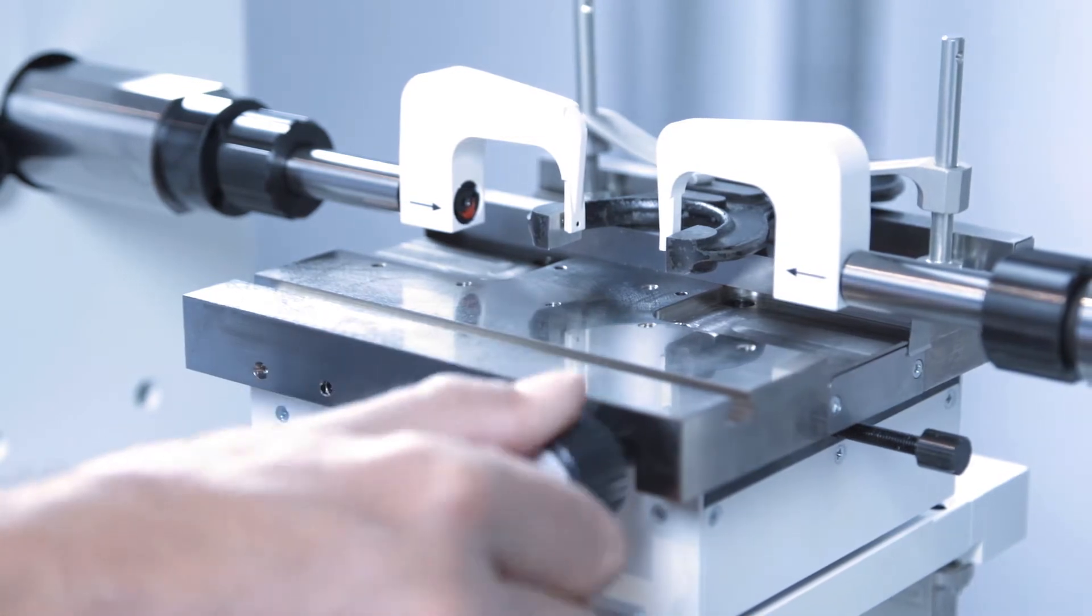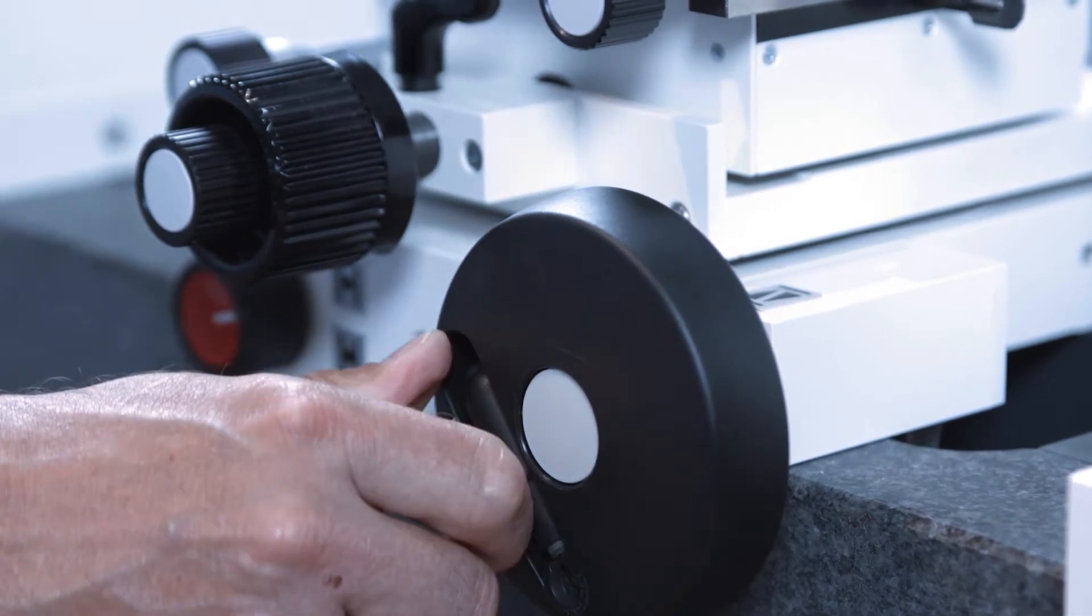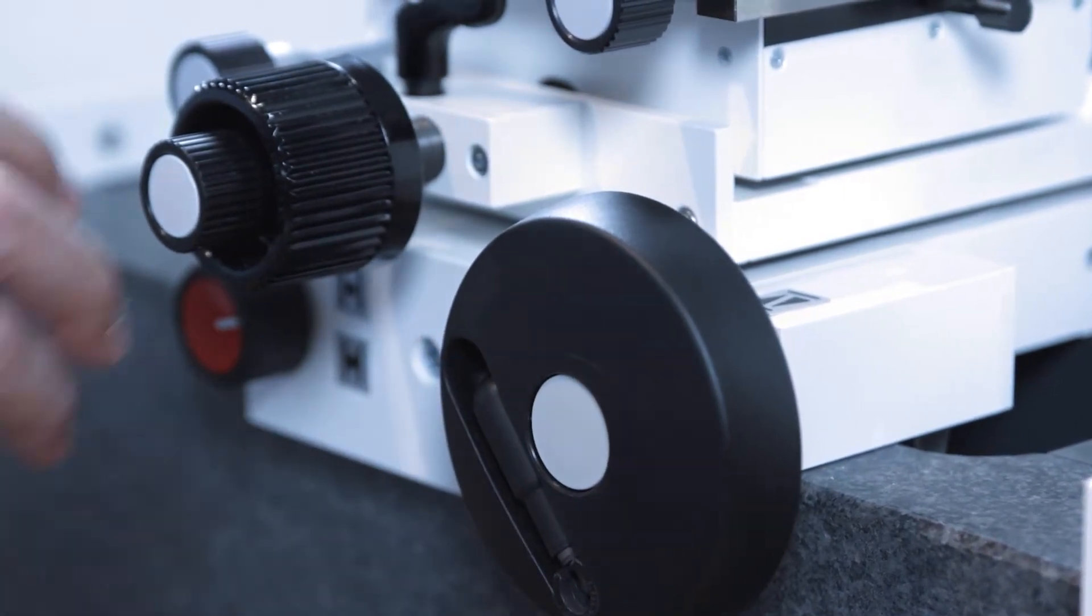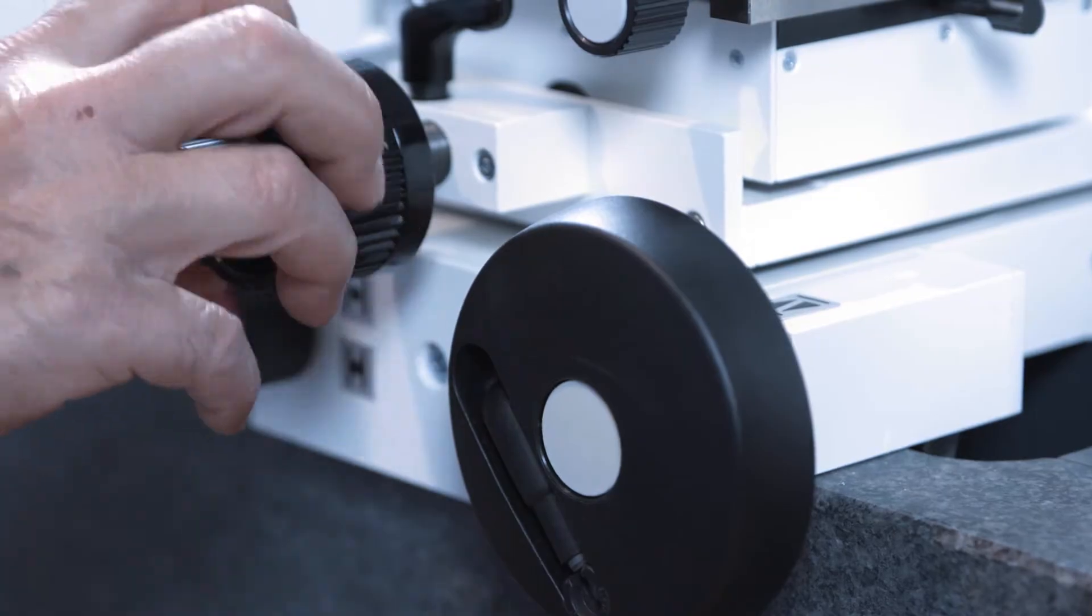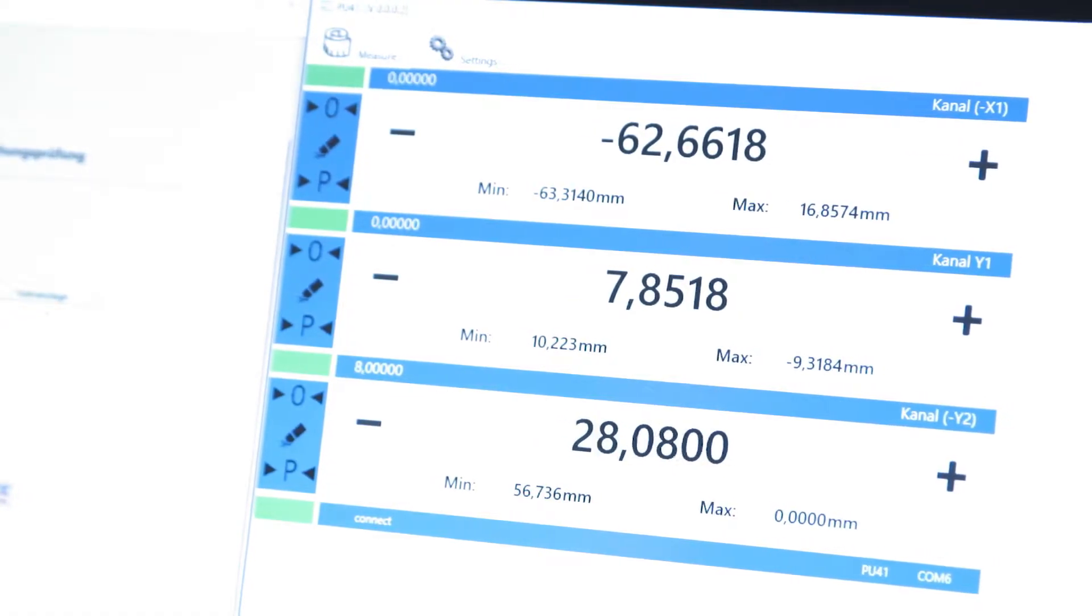The measuring stage with its 5 degrees of freedom is also important here. It offers the opportunity of performing all adjustments very precisely. The Y and Z axes provide the position data for further processing.